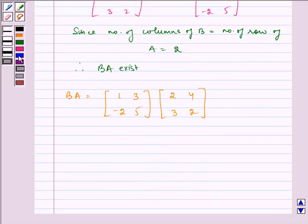Now, solving it further, which is equal to multiplying first row by first column, we get 1 into 2 plus 3 into 3. Now, multiplying first row by second column, so we get 1 into 4 plus 3 into 2.